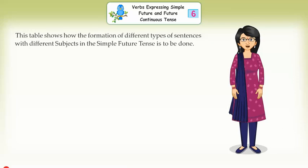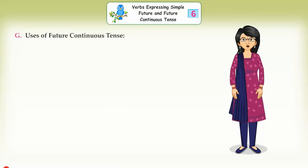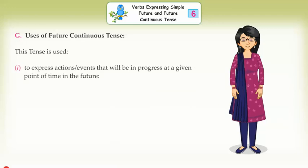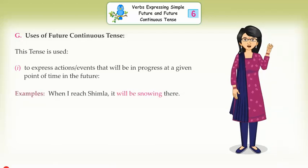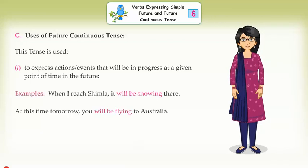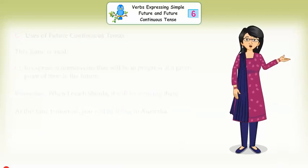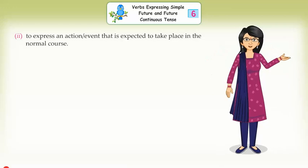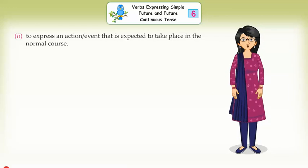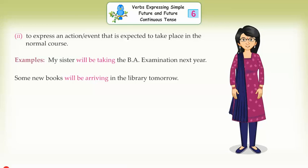This table shows how the formation of different types of sentences with different subjects in the future continuous tense is to be done. Uses of Future Continuous Tense: this tense is used — one, to express action or events that will be in progress at a given point of time in the future: When I reach Simla, it will be snowing there. At this time tomorrow, you will be flying to Australia. Second, to express an action or event that is expected to take place in the normal course: My sister will be taking the BA examination next year. Some new books will be arriving in the library.